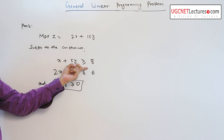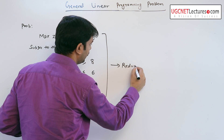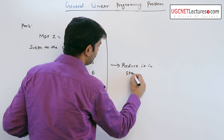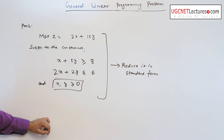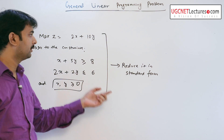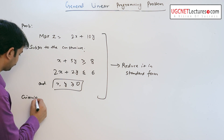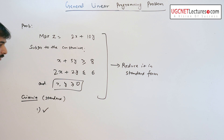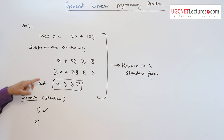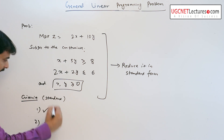How do we reduce this problem to its standard form? We know the criteria of standard form. The objective function is of maximization type — the first criteria of standard form is satisfied. The second criteria is that all the constraints are of equality type, which means the second criteria is not satisfied.